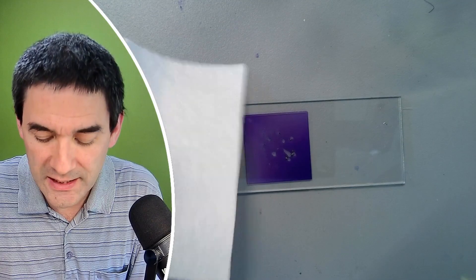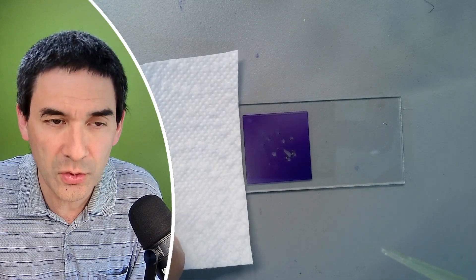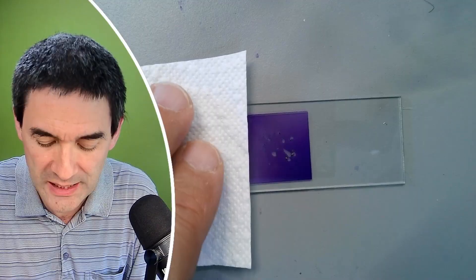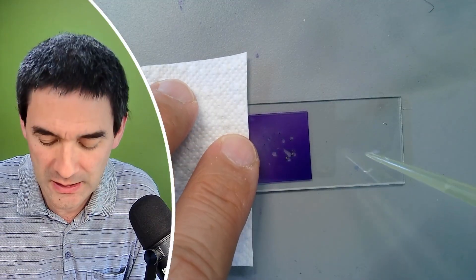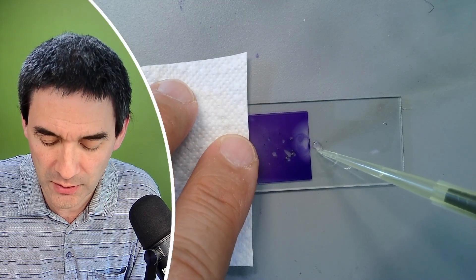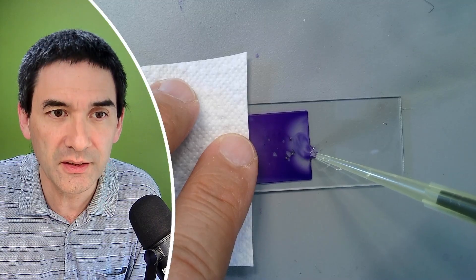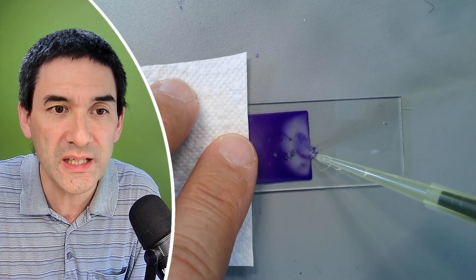In order to remove any excess stain, you can apply a tissue paper or filter paper on one edge here, and you press down a little bit and then the other edge you add a little bit of water. You can see that the water flows in.